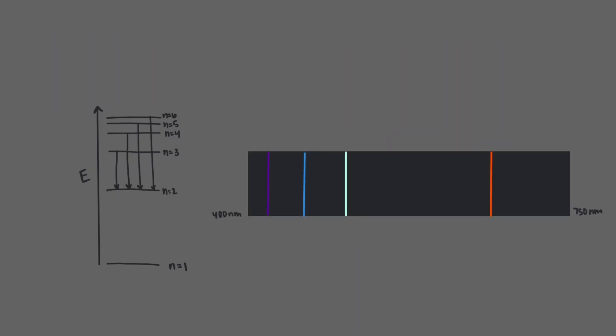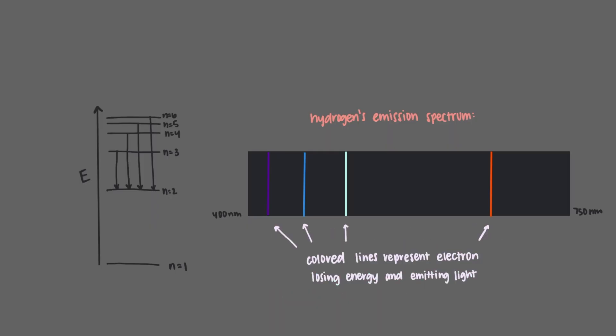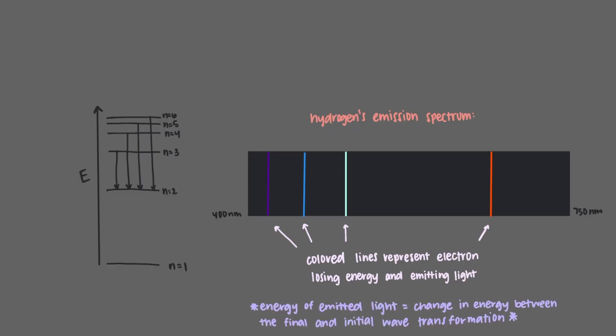This spectrum is called an emission spectrum, and every atom has its own unique emission spectrum. This one shown here is hydrogen's emission spectrum. The colored lines represent an electron losing energy and emitting light, hence the name of the spectrum. The energy of the emitted light is equal to the change in energy between the final and initial wave transformation.